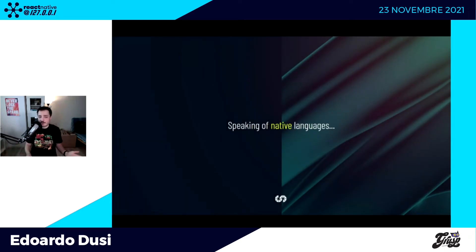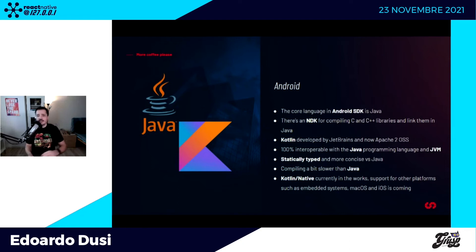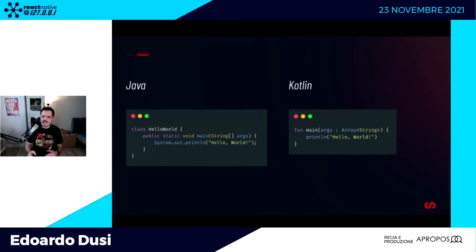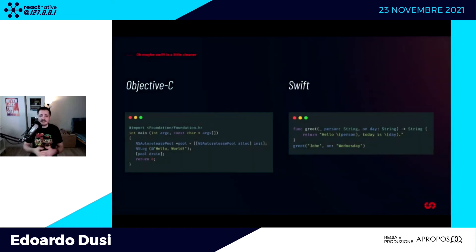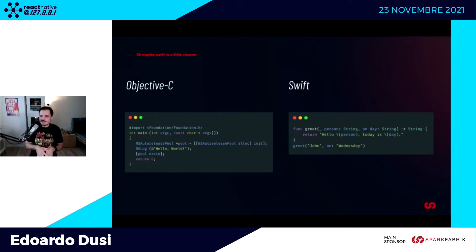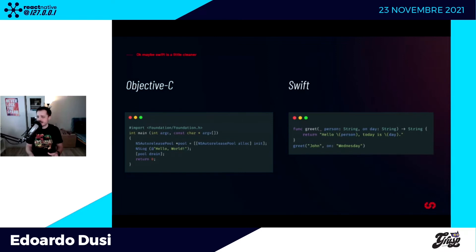Riguardo ai linguaggi nativi: su Android ci sono Java e Kotlin. Kotlin è stata introdotta di recente per migliorare la sintassi di Java e renderla più moderna. Su iOS ci sono Objective-C, quello storico, e Swift, introdotto per semplificare la gestione della sintassi e migliorare le performance. Non ci interessa tantissimo perché una gran parte degli sviluppatori React Native probabilmente non metterà mai mano a codice nativo, però suggerisco almeno darci un'occhiata per capire i costrutti di base.